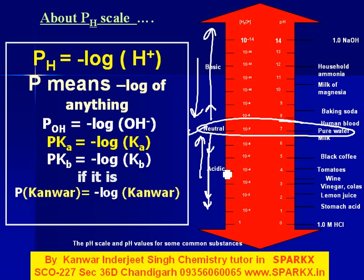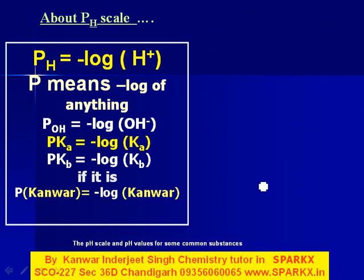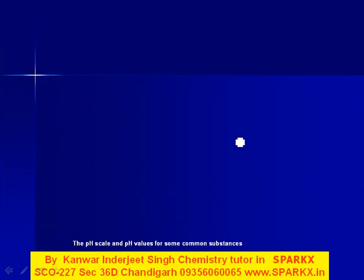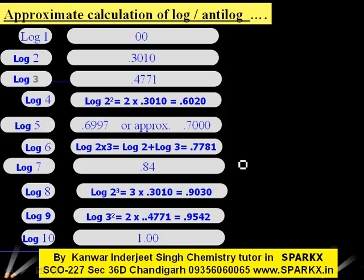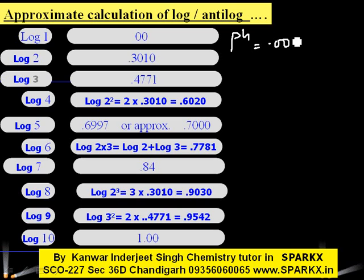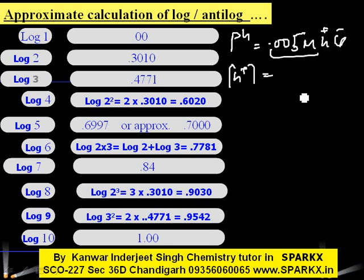Now, how do we calculate pH? Let's suppose we have already covered log and antilog values. Suppose we have to calculate the pH of 0.001 molar HCl or 0.005 molar HCl. Since HCl is a strong acid, we assume complete dissociation, so the H⁺ ion concentration equals the molarity of HCl.